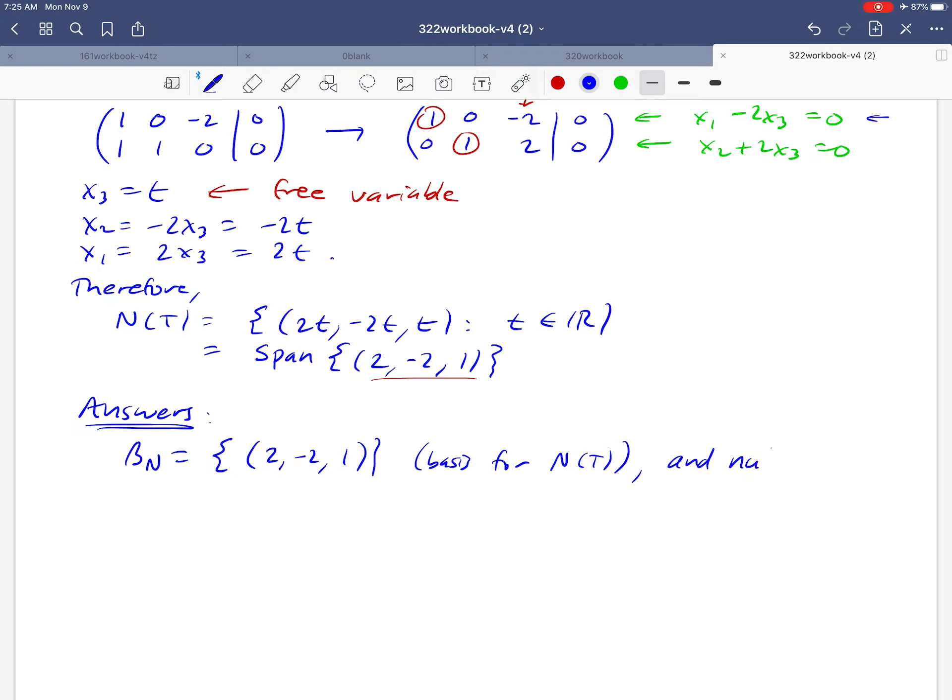And what would the nullity be? Well, the nullity is just the dimension of the null space. We found a basis. It only has one vector in it, so the nullity of T is equal to 1.